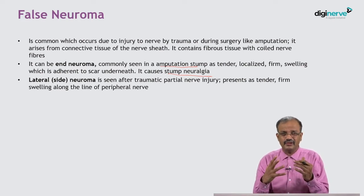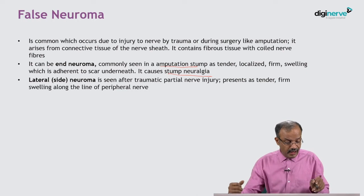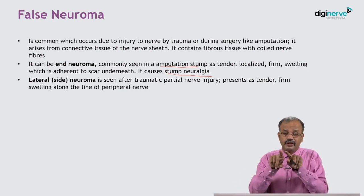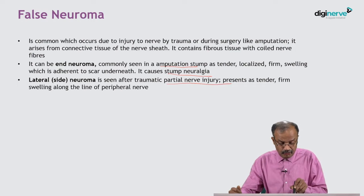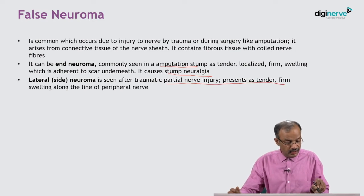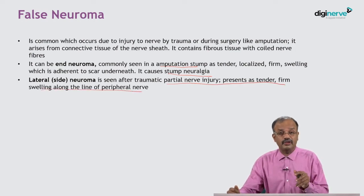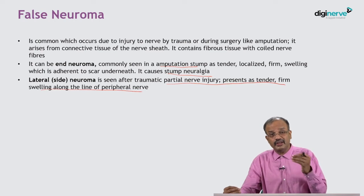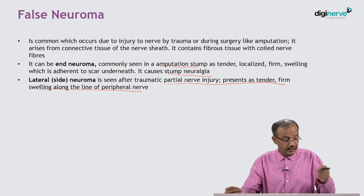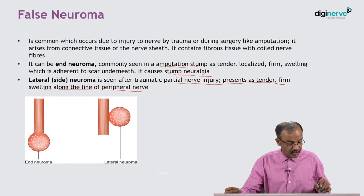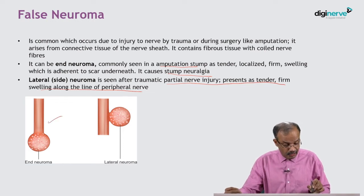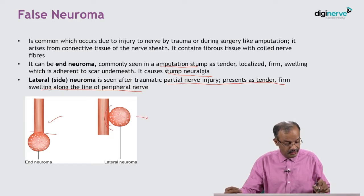Patients with endoneuroma will have severe, excruciating pain continuously on the stump. Lateral neuroma is over the lateral aspect of the nerve, not the end. It is a partial nerve injury, occurring along the line of the peripheral nerve — a tender swelling laterally, not over the end. Diagram-wise, the endoneuroma is commonly seen in the amputation stump, while the lateral neuroma results from partial injury. This is the meaning of false neuroma.